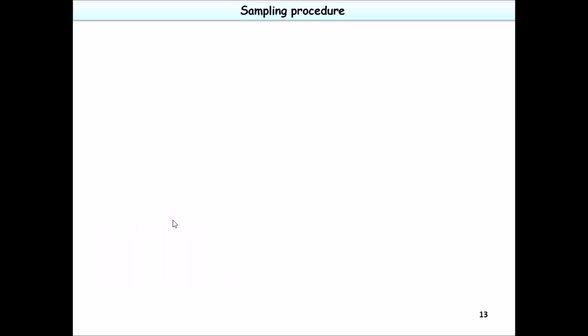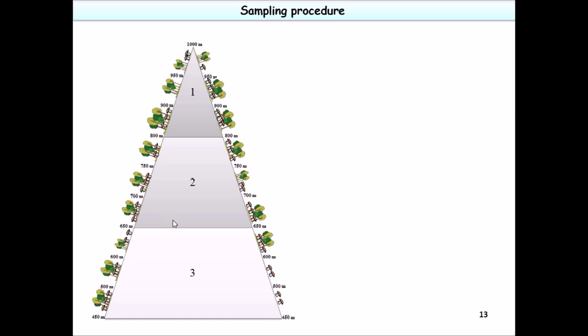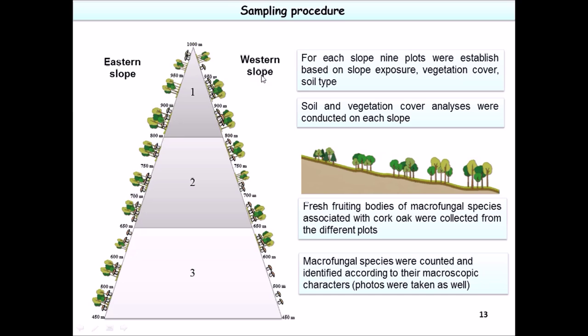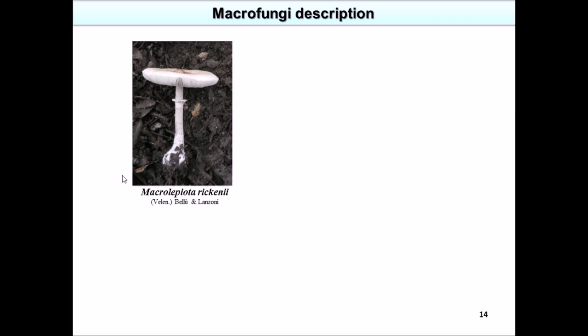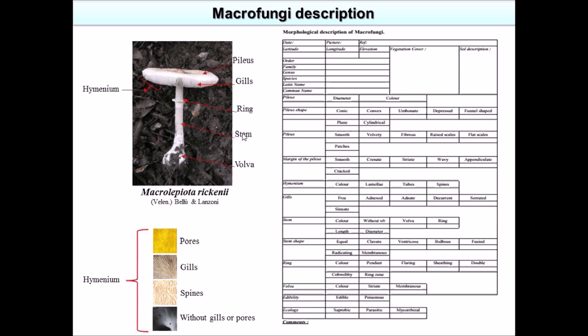The sampling procedure is straightforward. I selected two different slopes — the eastern slope and the western slope. The eastern slope is more humid and contains more tree species, while the western slope is drier with a lower percentage of vegetation cover. From each slope I collected and photographed macro fungal species, describing each one according to characteristics of the pileus, gills, ring, and stem, which facilitated morphological description.